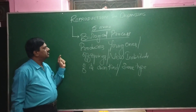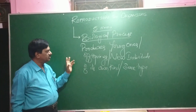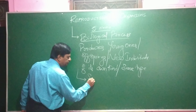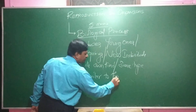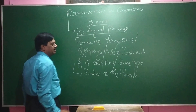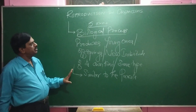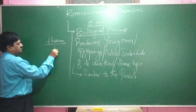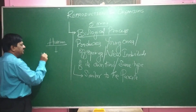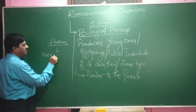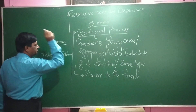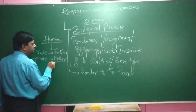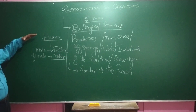Reproduction is a biological process where it produces young ones of its own kind, and these young ones should be similar to the parents. The young ones resemble the parents. For example, humans produce their own type of young ones — a male baby resembles the father, whereas a female baby resembles the mother, not in size, but they resemble their own type.